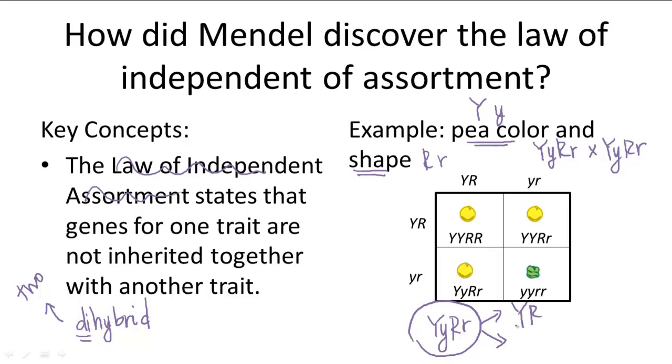And that would be big Y, big R, and little y, little r. And the reason for that is because the dominant alleles would be linked together. They can't be separated, so they're inherited together. And the recessive alleles, same thing. They're linked together. They can't be broken into two different gametes, so they're inherited together.